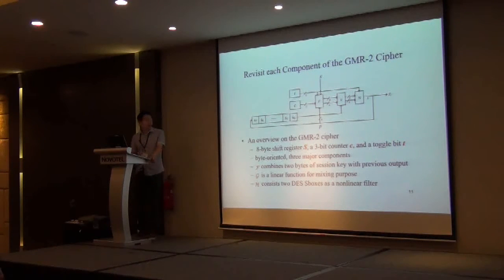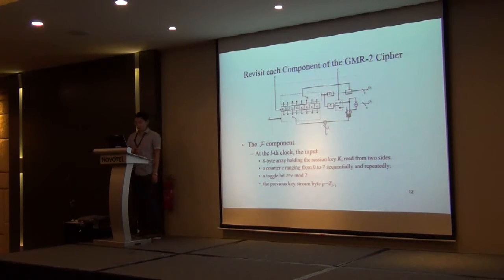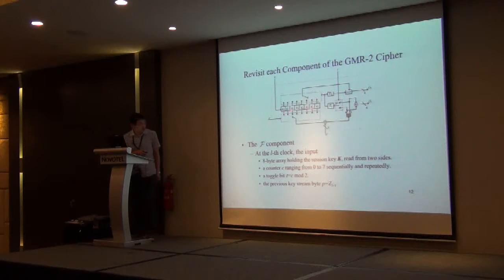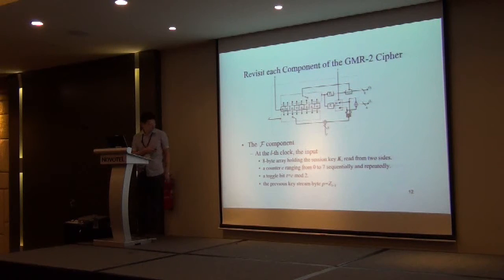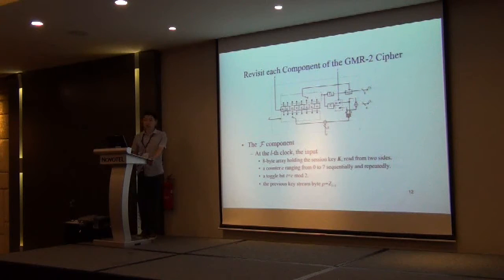The G component is a linear function, and H contains two S-boxes, which are S2 and S6. Let's see the F component. At each clock, 8 bytes of the session key K0 to K7 are input to the cipher along with counter number C, which ranges from 0 to 7. T is decided by C: if C is 0 then T is 1, and if C is even then T is 0.